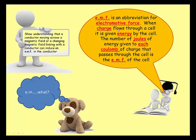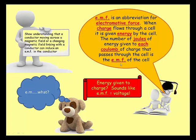When charge flows through a cell — a battery cell — it's given energy by the cell. The number of joules of energy given to each coulomb of charge that passes through the cell is what we call the EMF, or electromotive force, of the cell. You may be thinking it sounds a lot like voltage — and you'd be right, because energy given to charge is what we call voltage. So EMF and voltage are the same principle.